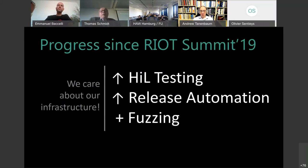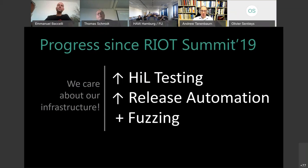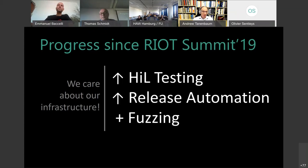We've done a lot of work in infrastructure and quality assurance. We improved the HIL testing — this was a large discussion already at the last summit. We now have very extensive release automation and testing, and newly introduced was fuzzing. The number of tests undertaken and the bug fixing that results from this has largely increased.